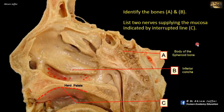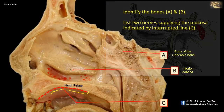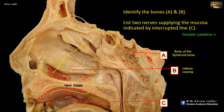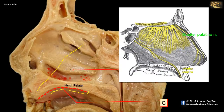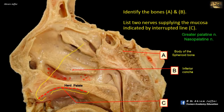List two nerves supplying the mucosa indicated by interrupted line C. This is the mucosa of the hard palate, and it is supplied by the nerve that comes from the pterygopalatine ganglion and opens on the hard palate as the greater palatine nerve, which supplies the posterior part. There is another nerve coming from the nasal septum passing through the incisive canal — this is the nasopalatine nerve, which supplies the anterior part. So the nasopalatine nerve and the greater palatine nerve.